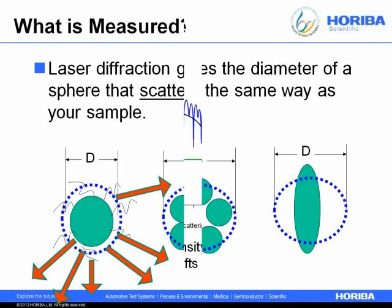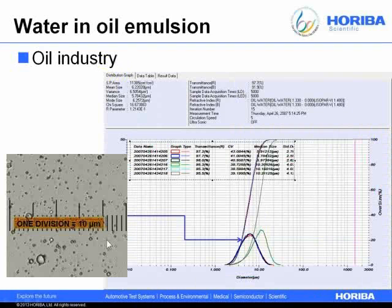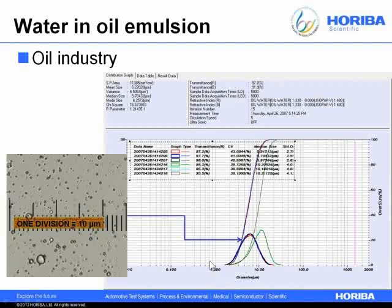An example measurement from a water-and-oil emulsion from the oil industry shows a micrograph with droplets around 5 microns — each division is 10 microns. The size distribution obtained by laser diffraction shows three repeats of each of two samples, overlaying quite nicely. The micrograph matches the diffraction result, with a peak around 5 microns and a tail past 10 microns. A second pharma emulsion shows a bimodal distribution using a fraction cell for small sample volume — the glass cell is chemically resistant, which is useful when your continuous phase is oil.